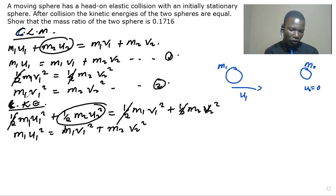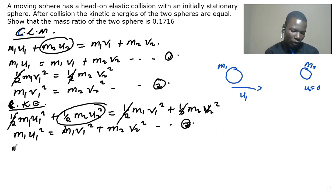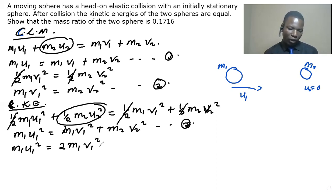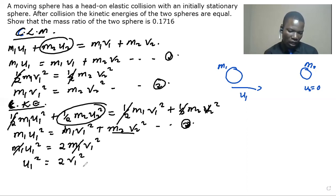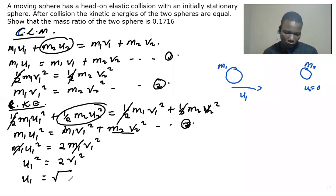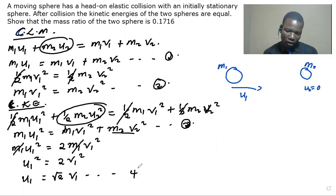Now we substitute equation 2 into equation 3. Since m1*v1² = m2*v2², we have m1*u1² = 2*m1*v1². The m1 terms cancel, giving u1² = 2*v1², so u1 = √2 * v1. This is equation 4, a relationship between u1 and v1.